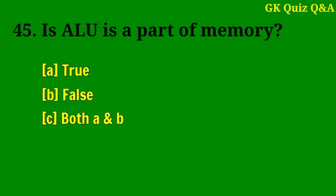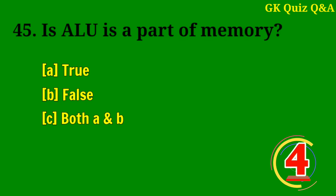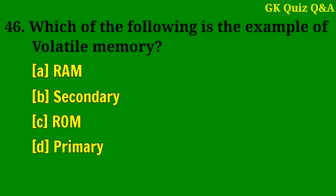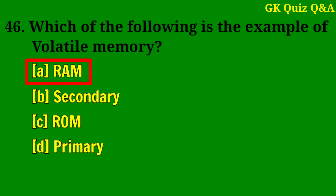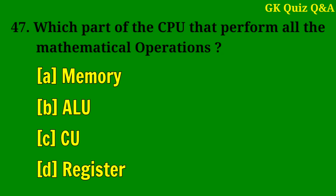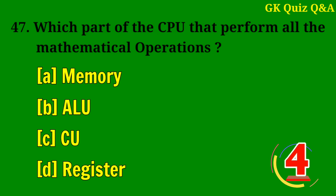Is ALU a part of memory? Answer B: False. Which of the following is an example of volatile memory? Answer A: RAM. Which part of the CPU performs all the mathematical operations? Answer B: ALU.